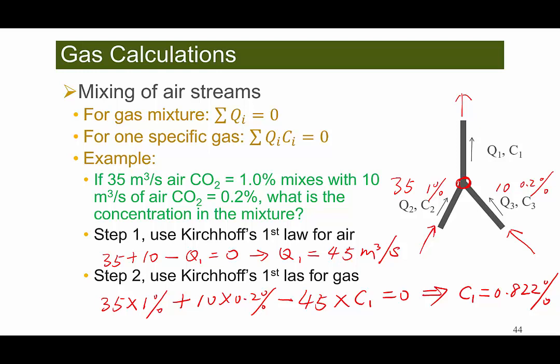In this video, we talked about how to solve a gas make problem — calculating how much air is needed to dilute a section of a mine so that the concentration of a gas stays below a limit. We also covered how to calculate the resulting concentration when two streams of air come together. Thank you very much, and we'll see you in the next video.